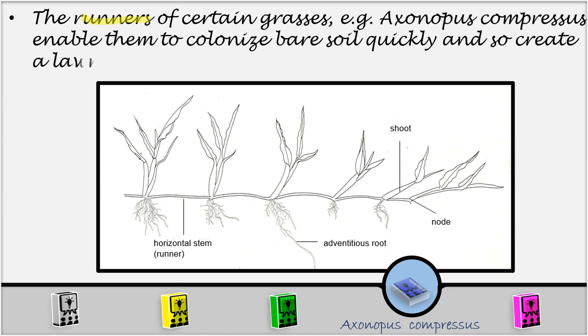The runners of certain grasses, for example, Axonopus compressus, enable them to colonize bare soil quickly, and so create lawns. So, here we have our Axonopus compressus. This one can colonize the area very fast because of the presence of the runners. These runners can move very fast and colonize new area.